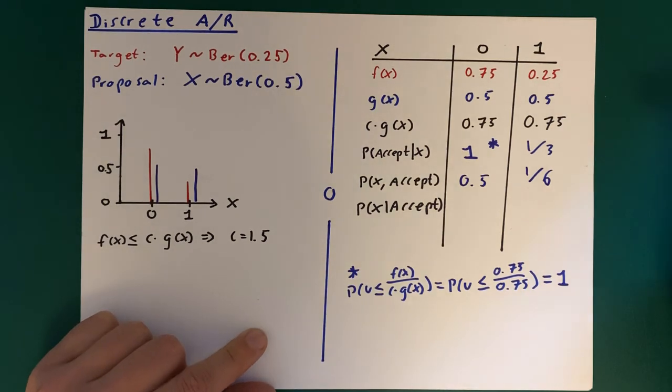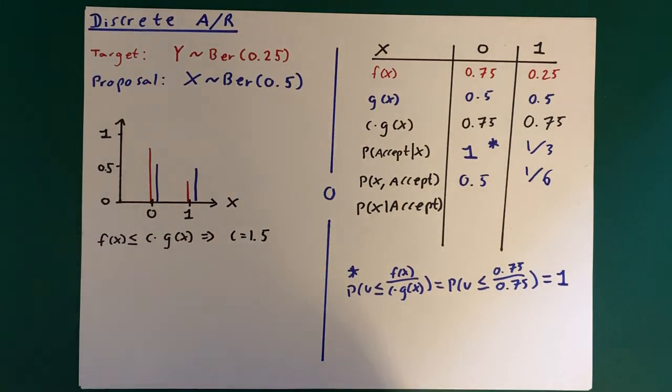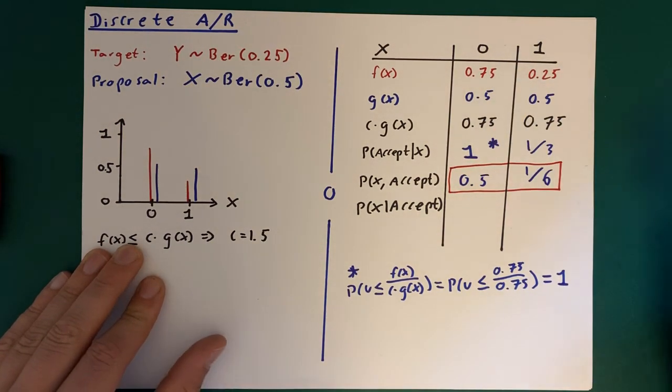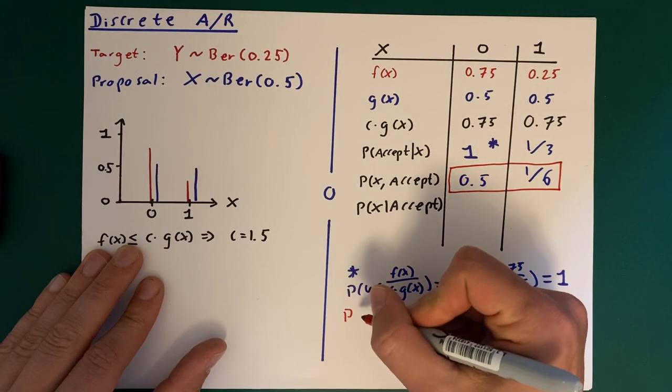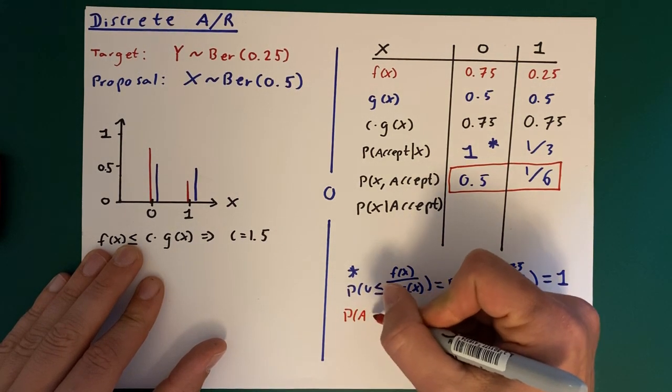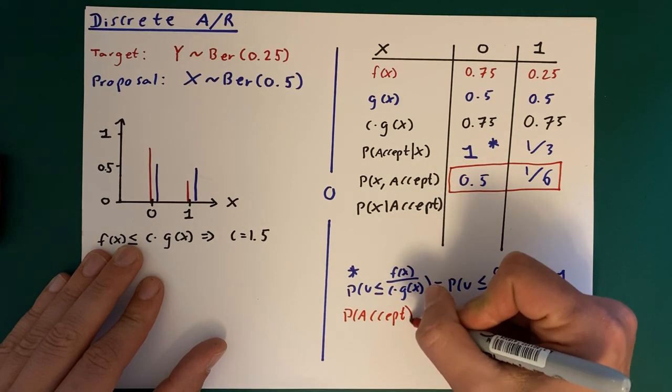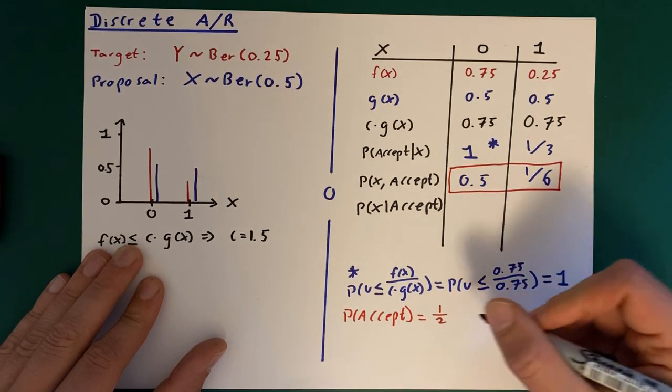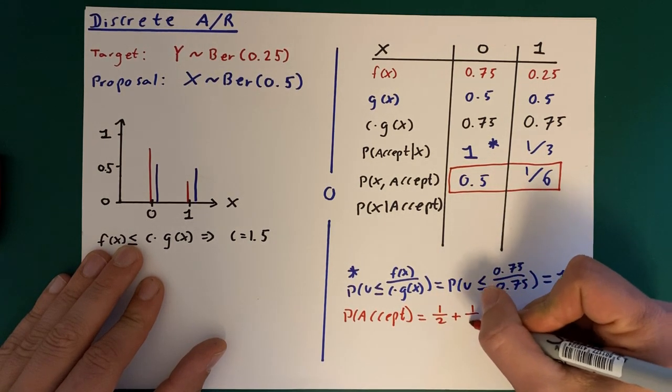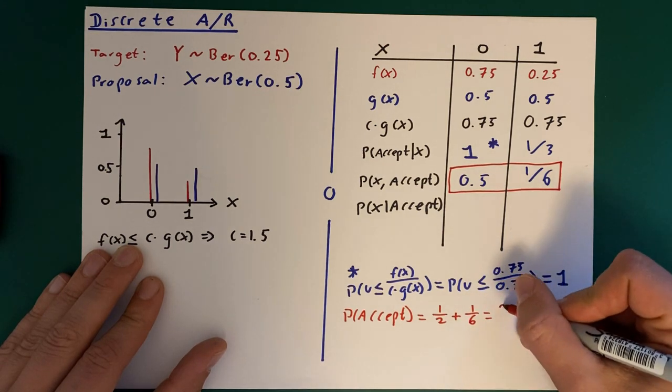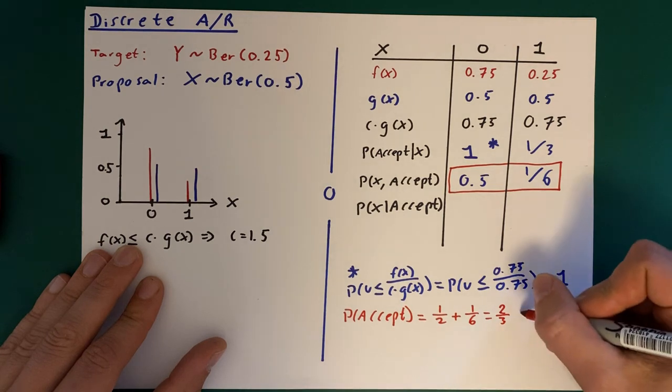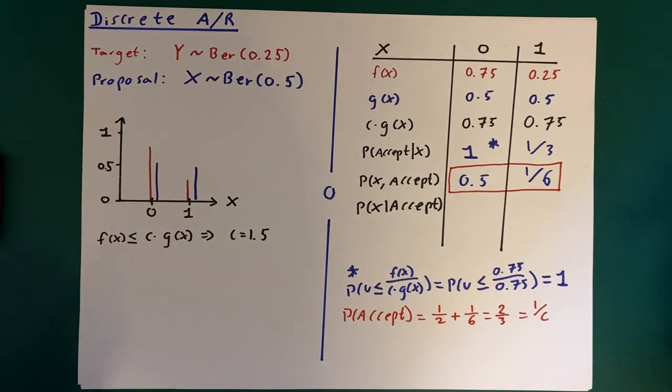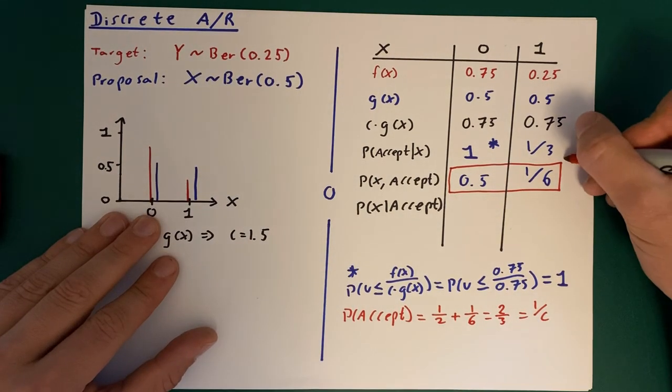And we'll just quickly note that if we take here then the probability of just accepting, it's going to be 1/2 plus 1/6, which is going to be 2/3, which is then of course also the same as 1 over c. We'll just note that we could even give it a little extra star here.